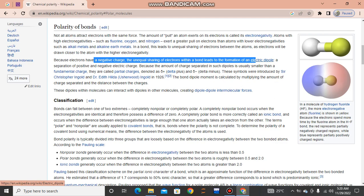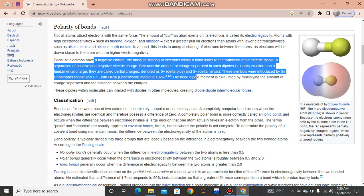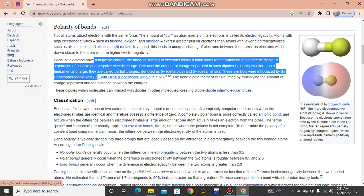...the formation of an electric dipole: a separation of positive and negative electric charge. Because the amount of charge separated in such dipoles is usually smaller than a fundamental charge, they are called partial charges, denoted as delta plus (δ+) and delta minus (δ−). These symbols were introduced by Sir Christopher Ingold and Dr. Edith Hilda Ingold in 1926.